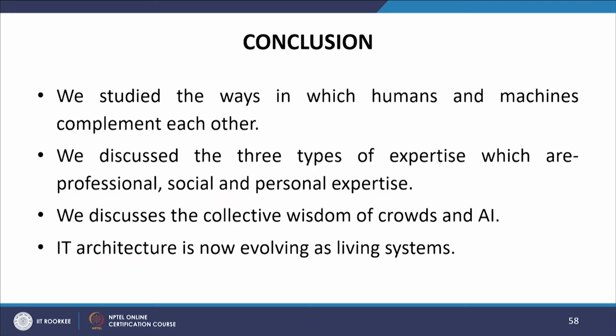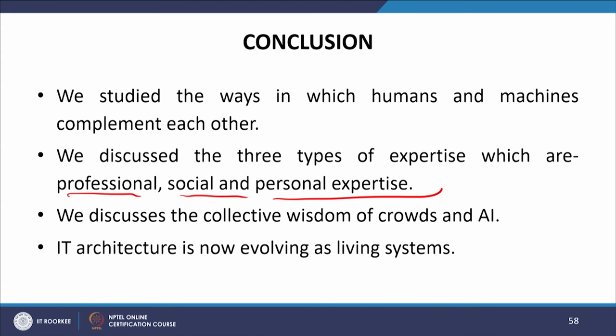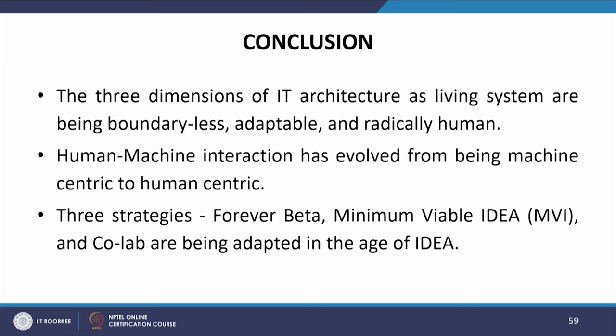In conclusion, we have studied the ways in which humans and machines complement each other. We discussed the three types of expertise — professional, social, and personal — and the collaborative wisdom of crowds and AI. We examined how IT architecture is evolving as living systems with three dimensions: boundaryless, adaptable, and radically human. We explored human-machine interaction evolving from machine-centric to human-centric, and the three strategies — forever beta, minimum viable idea (MVI), and co-lab — and how they are being adopted in the age of IDEAS.